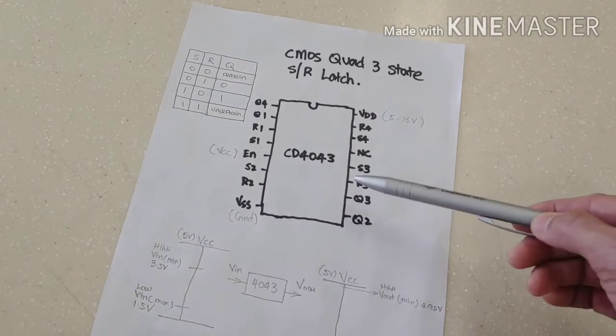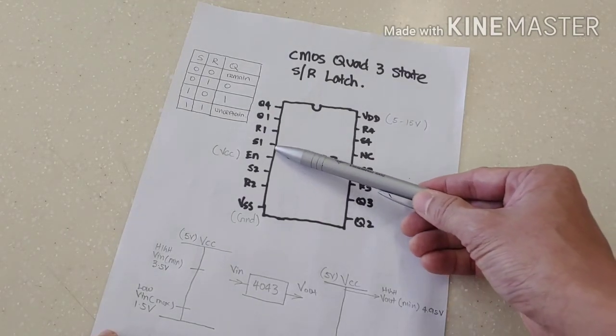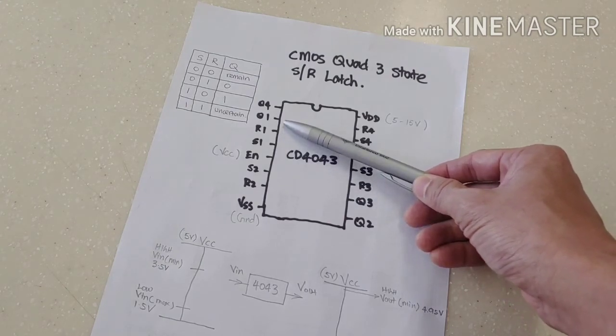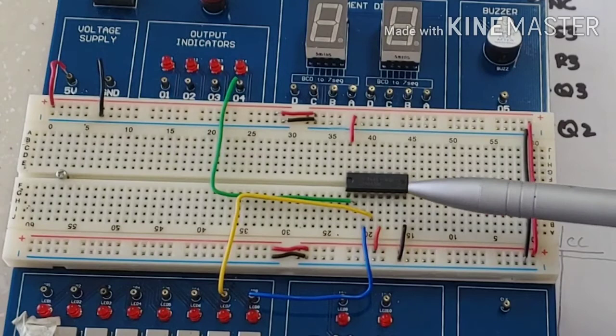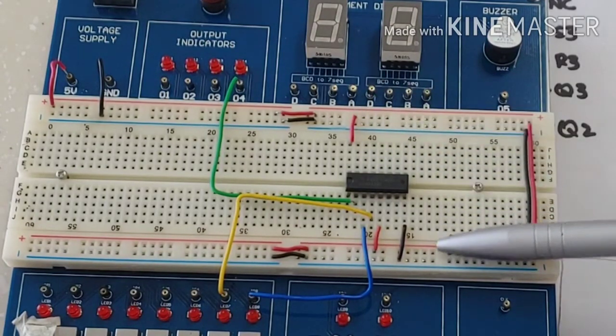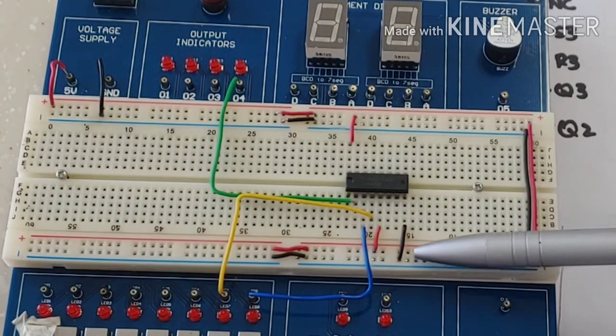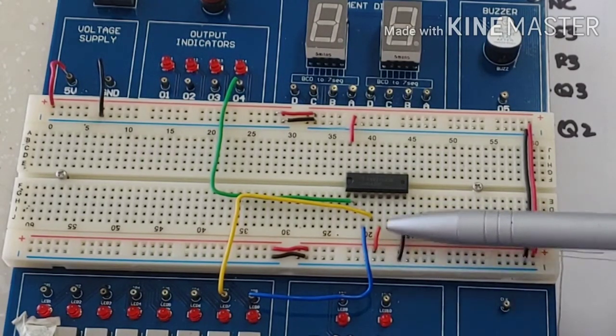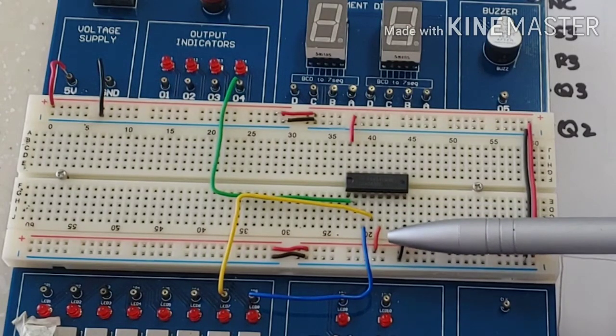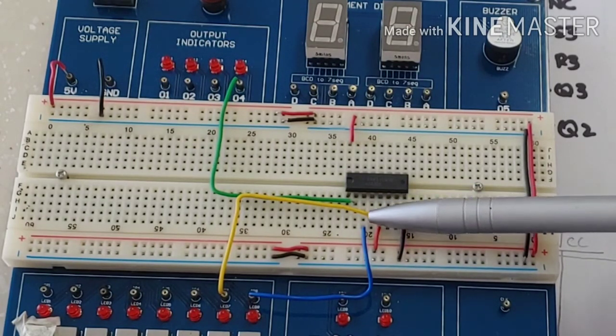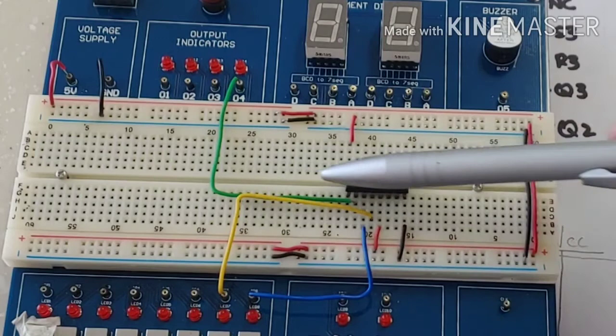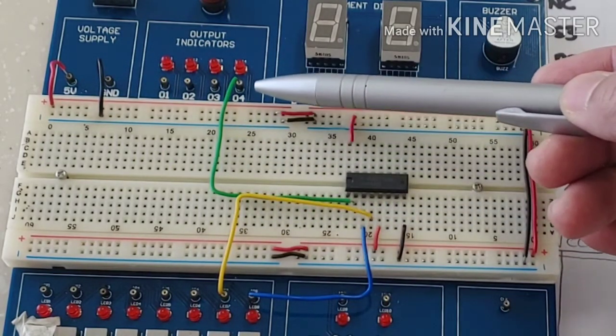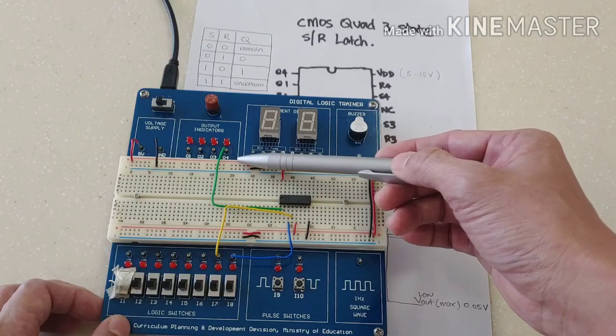Now let's see how this works. What I am going to do is that I am going to use S1, R1 and Q1. Don't forget your power supply, don't forget your ground. What I have done is that I have placed the enable to a high 5V. The yellow is your set, your blue is your reset, and your green is your output.